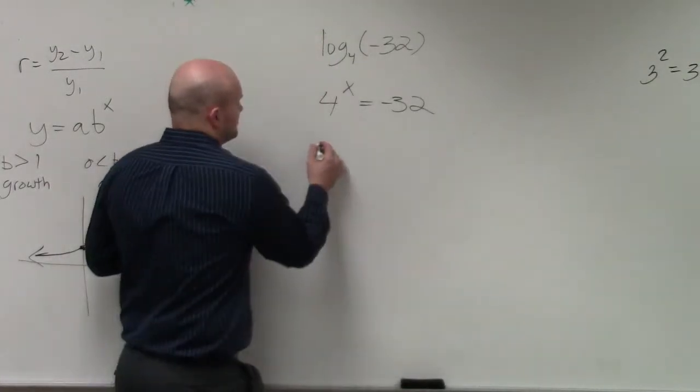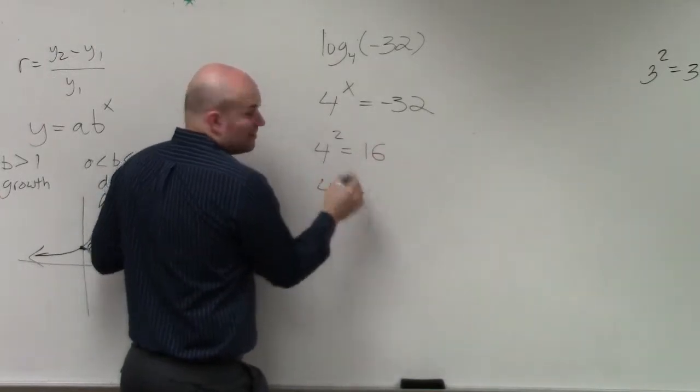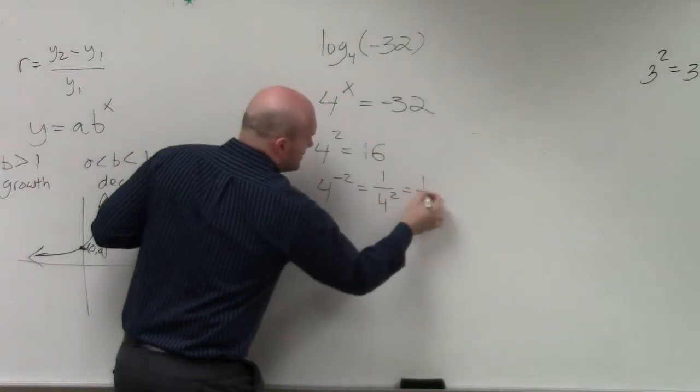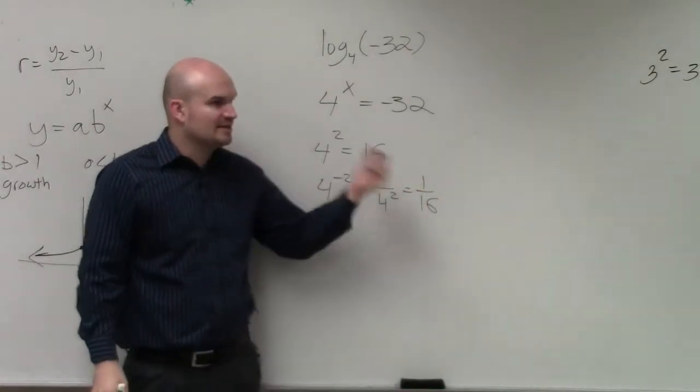Well, let's try it. Let's do 4 squared. That's 16. All right, well, then what about negative 2? Well, that's 1 over 4 squared. That's 1 over 16. So could I even raise that number 4 to a number to make it negative?